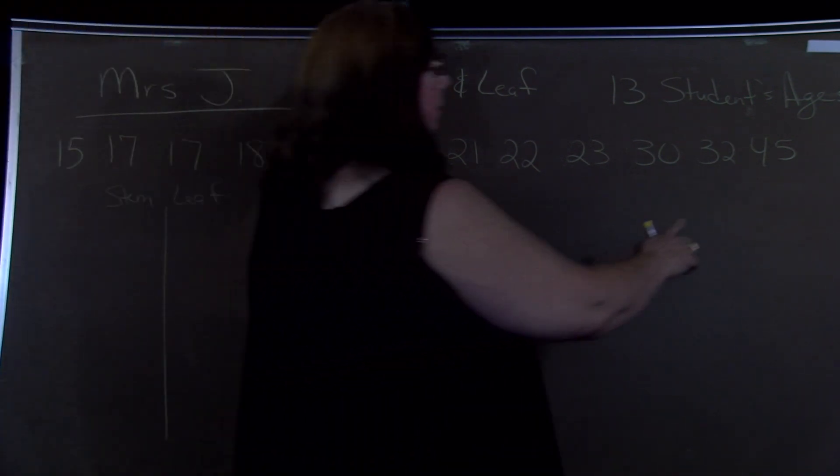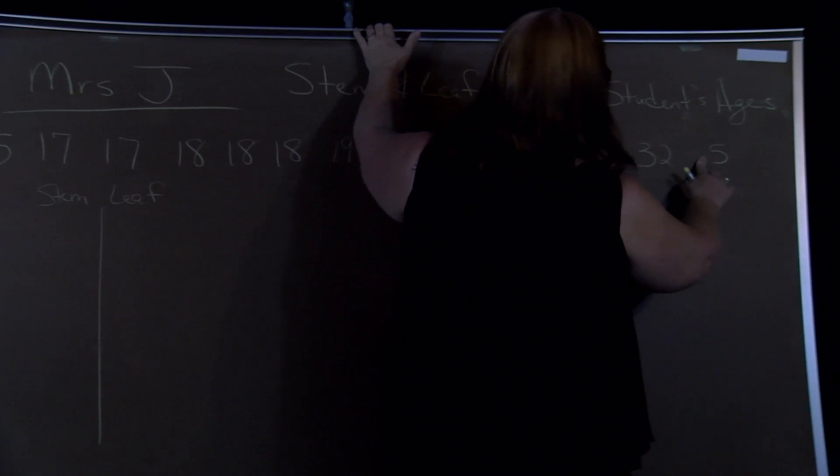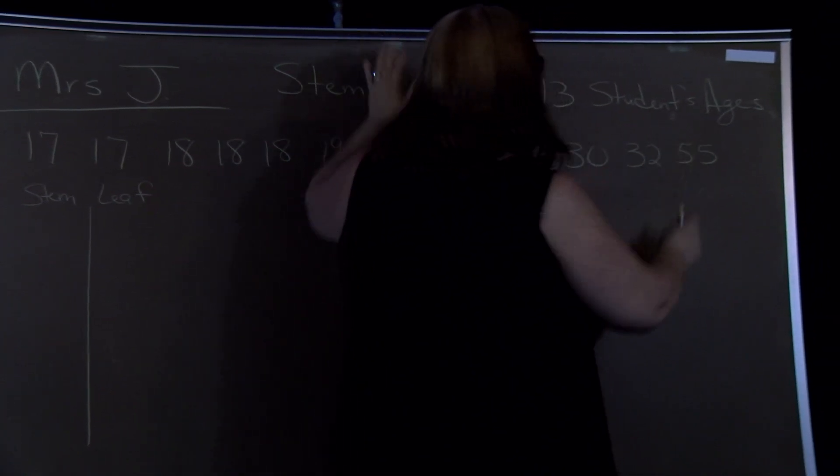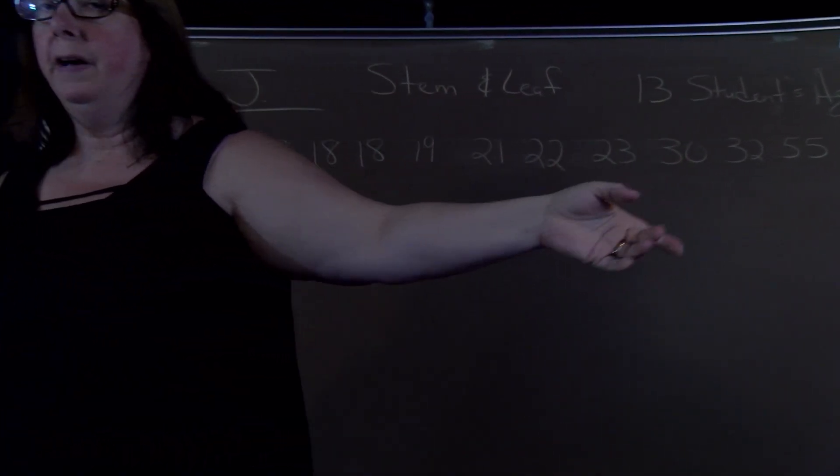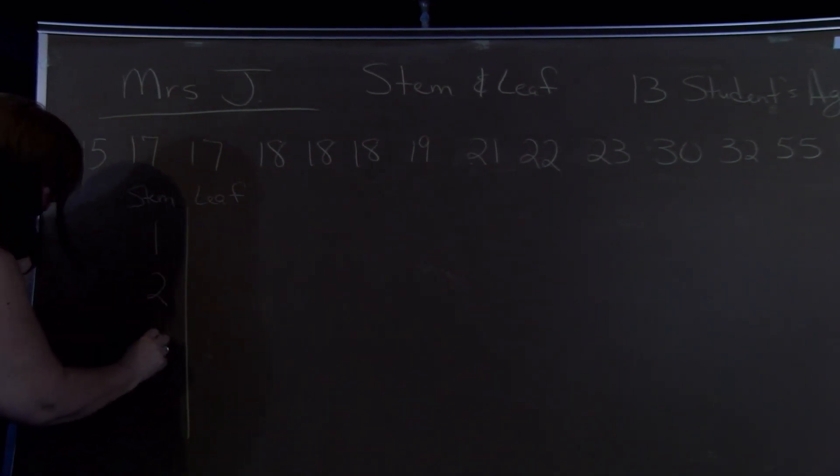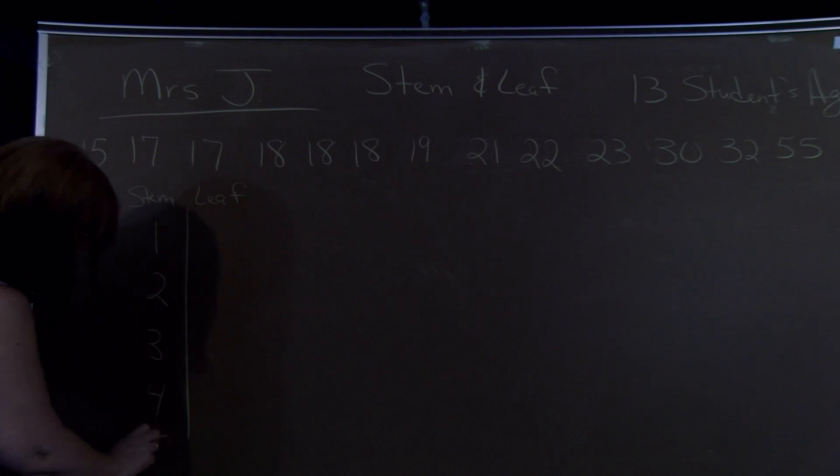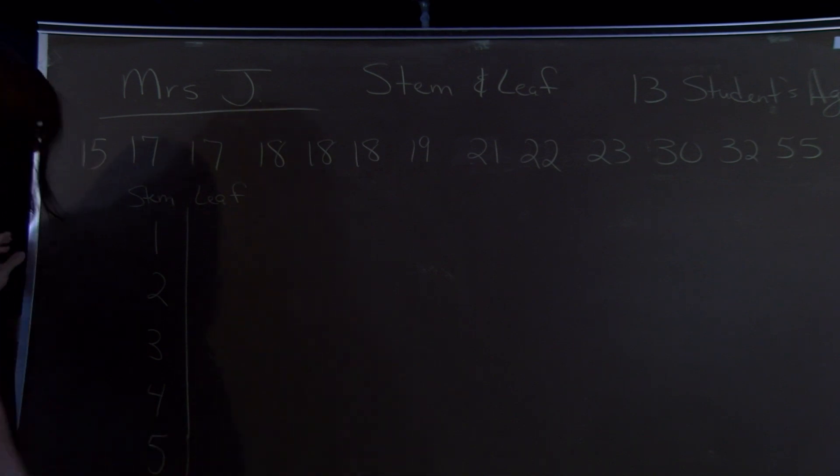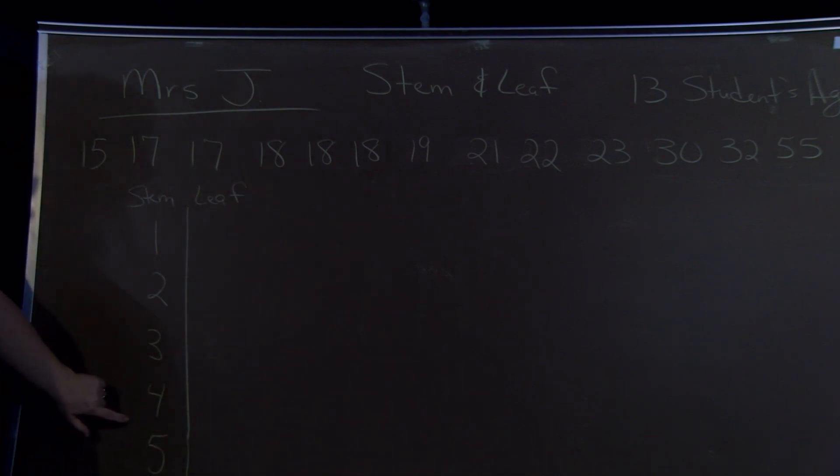So if we change this one to 55, our numbers are going from one to five on the left. So even though there's none in the 40s, we still have a four.